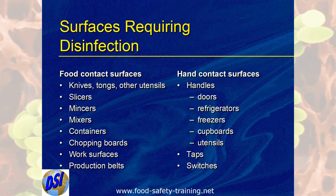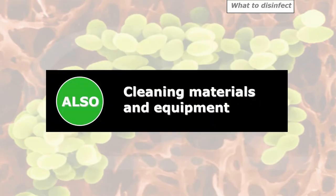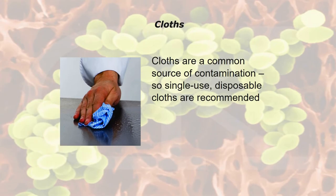And don't forget — hands are the biggest source of cross-contamination in a kitchen. What's got the potential to come into contact with our hands? Handles of doors, fridges, freezers, cupboards, utensils, taps, and switches. Cleaner materials and equipment — your mops and buckets — also need to be disinfected. Cloths are a common source of contamination, so single-use disposable cloths are recommended. The blue paper towel roll is much preferred because it works out a lot cheaper and it's single-use — just throw it away.